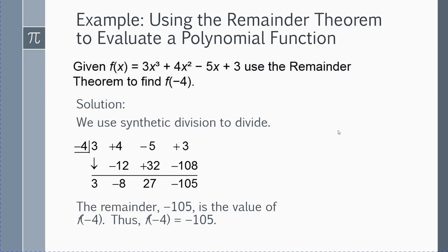Let me give you an example. Given that f of x is equal to 3x cubed plus 4x squared minus 5x plus 3, use the remainder theorem to find f of negative 4.